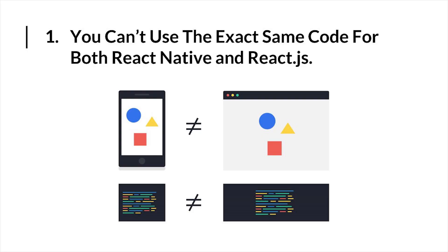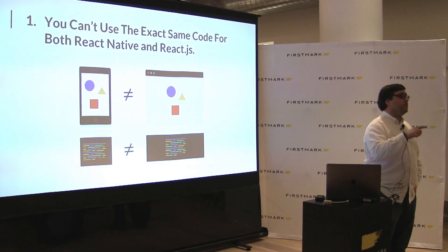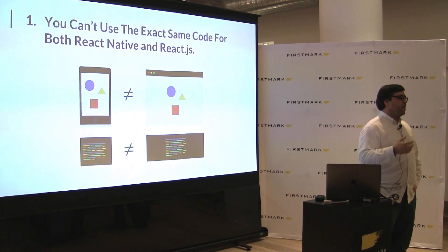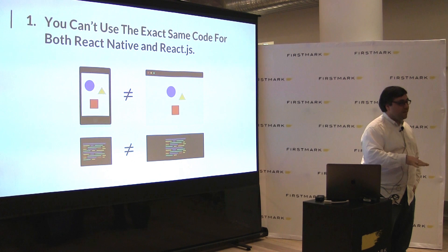Number one: you can't use the same code for React Native and React.js. If you already have a whole web app done in React.js, it's not a simple copy-paste and it's on mobile. There are some structural differences. That div tag — in React Native it's called a view. The nomenclature and the actual tag itself is different. The CSS styling is similar, but a little different.